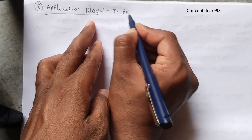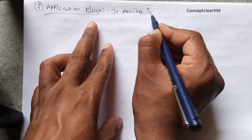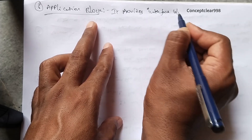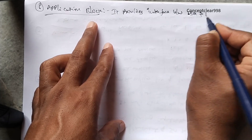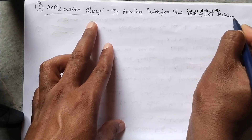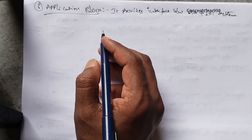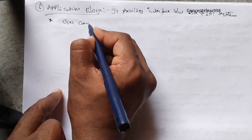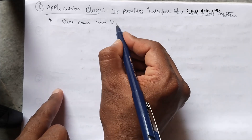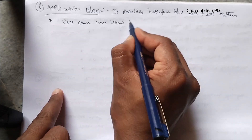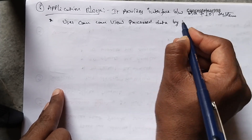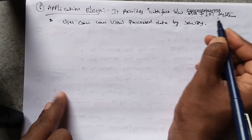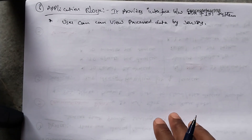The application block provides an interface between the user and the IoT system. The user can view and process data collected by sensors through this application interface.